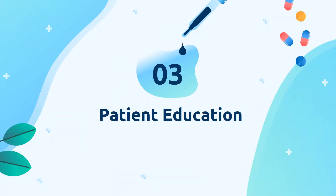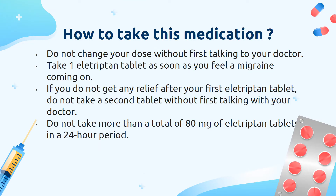Now let's talk about some of the most important patient counseling points. How should a patient take allotriptin? The patient should be instructed to not change dose without first talking to his or her doctor. The patient can take one allotriptin tablet as soon as the feeling of migraine comes on. If there is no relief after the first dose, do not take the second dose without doctor's approval. The patient should not take more than a total of 80 mg of allotriptin in a 24-hour period.